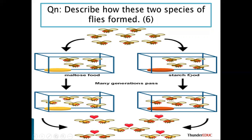Those which cannot feed on starch will die, and those which can feed on starch will survive. While on the other side, those which cannot feed on maltose will die, and those which can feed on maltose will survive. Over many generations, due to no gene flow between the two populations, this will result in different genotypes. This will lead to the species becoming genetically and phenotypically different, due to the different environmental conditions as a result of natural selection occurring independently.